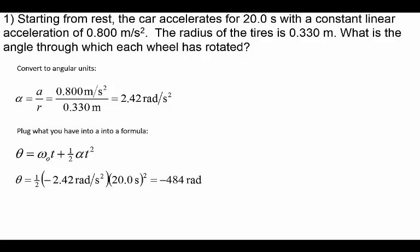So in this particular case, we've got our alpha, our angular acceleration equals our tangential acceleration divided by the radius. It equals 0.8 meters per second squared divided by 0.33 meters to give us 2.42 radians per second squared. We plug it into the kinematic formula that we have and we end up with the radial distance it turned was negative 484 radians.